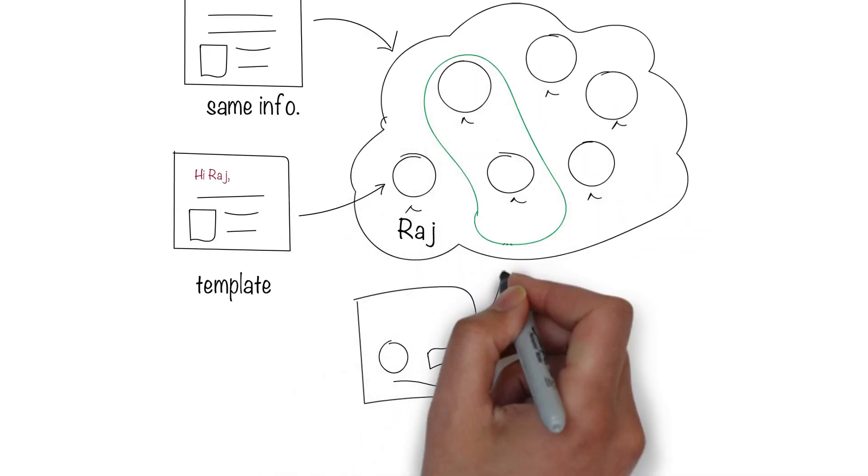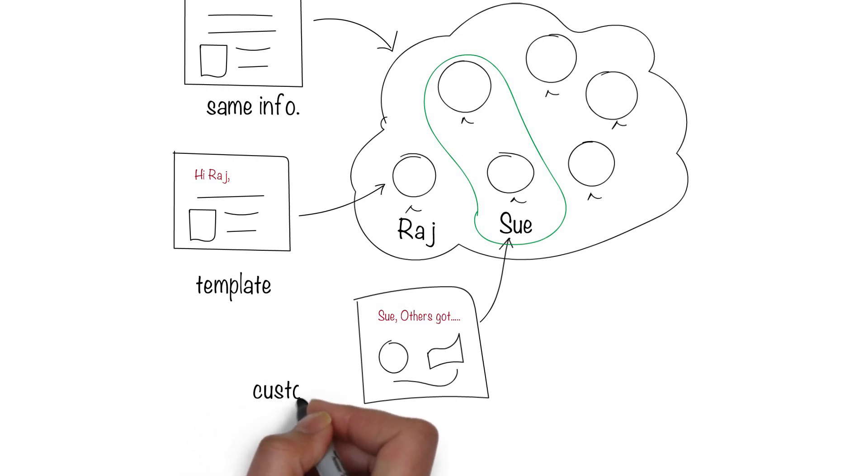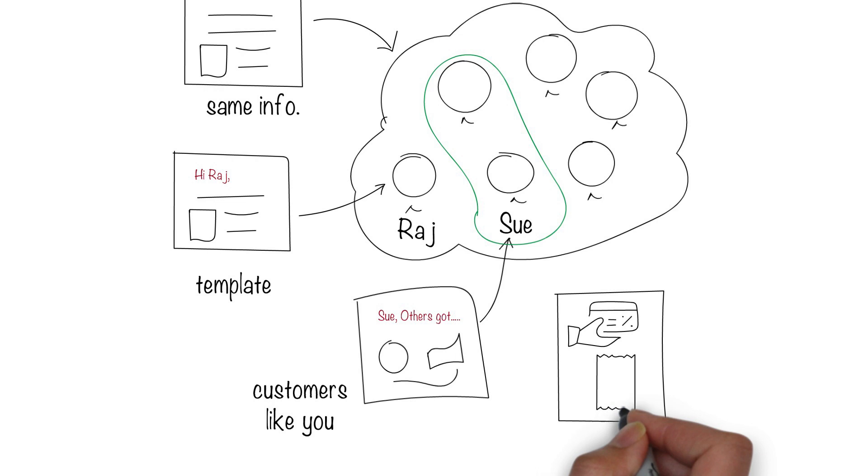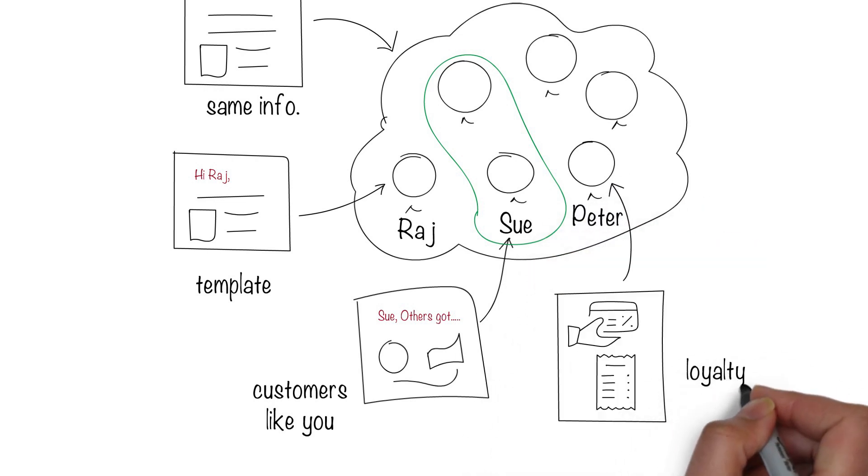In the next phase, we moved to a customers-like-you kind of personalization, where we were able to identify segments of customers who behaved like you and then make offers that are similar to people in that group. We then moved to using loyalty cards, where the customer swipes their card so that the company can understand their buying patterns and offer customized products in response to that.